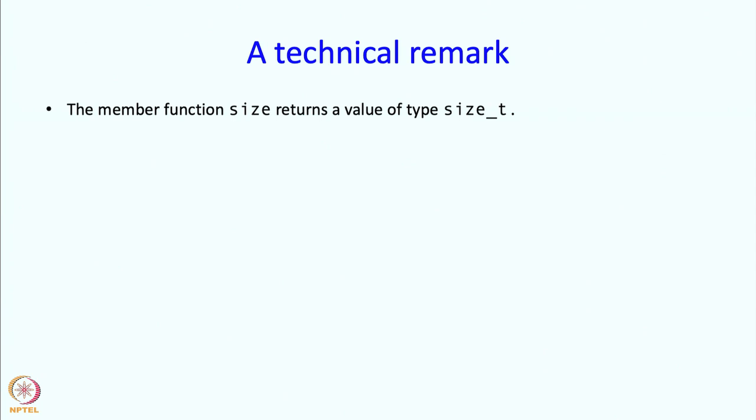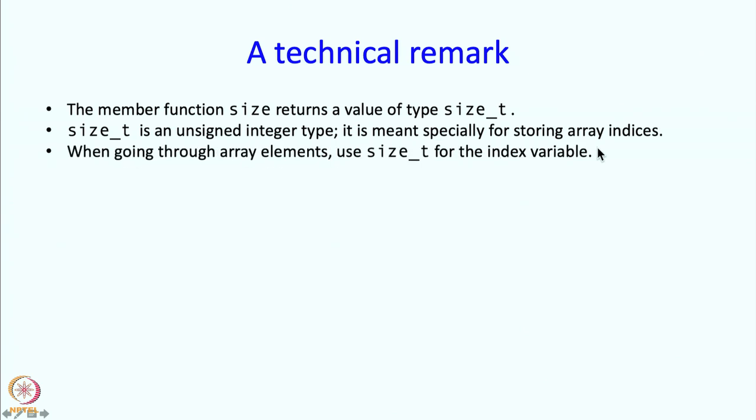I want to make a technical remark about vectors. There is a member function size, which returns the size. The size is returned as a type size_t. Size_t is just an alias for a certain kind of unsigned integer type. It is a type of variable which is meant specially for storing array indices. Therefore, when you go through array elements or rather vector elements, you should use size_t for the index variable.